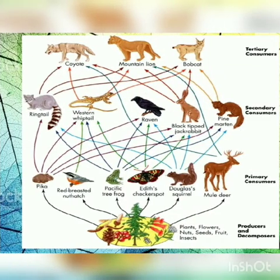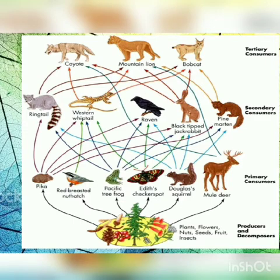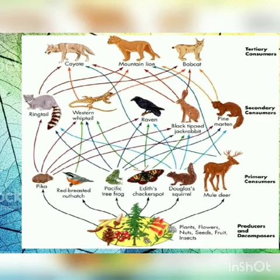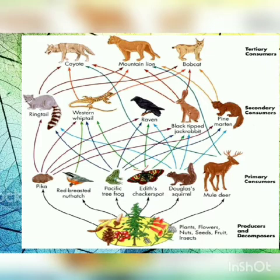Now we will see examples of a food web. The picture shows a food web with four levels: producers, primary consumers, secondary consumers, and tertiary consumers. This is a network of many food chains that have come together. To read a food web, note that the bottom-most level is always the producer — in this case, plants, flowers, nuts, seeds, fruits, and small micro-insects.